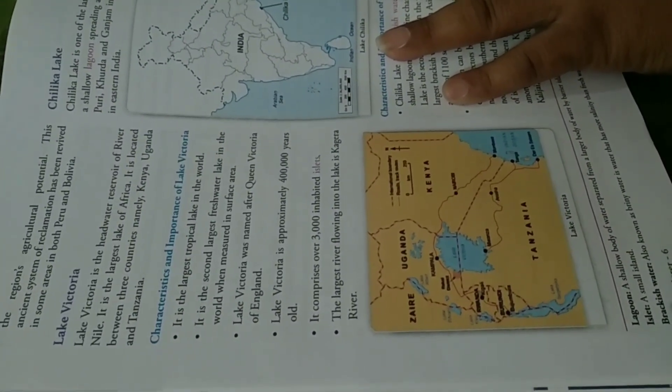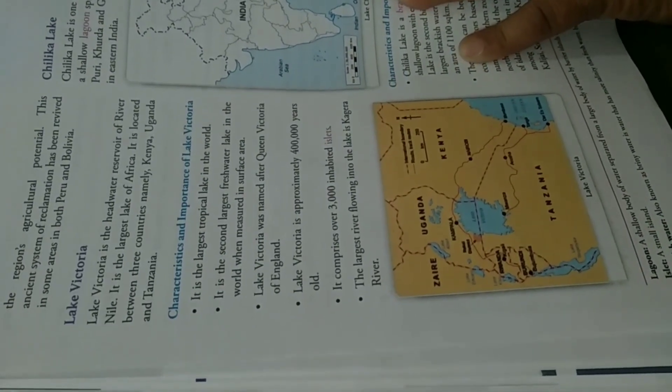Lake Victoria is the headwater of River Nile. The word 'headwater' means the tributary stream of a river. So Lake Victoria also drops its water into River Nile.